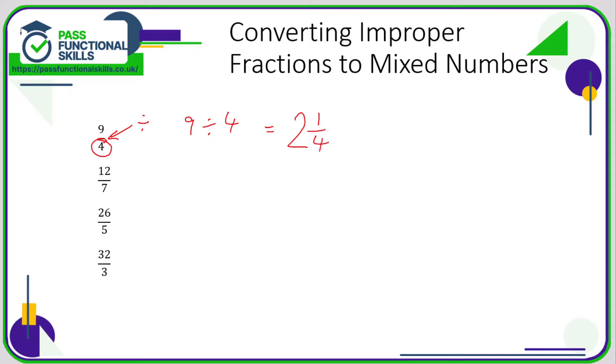So nine quarters or nine over four is the same as two and a quarter, and this is a much more sensible way to give an answer to a question. If I said to you that I'd eaten nine quarters of a pizza, that's a bit of a strange thing to say, but if I said two and a quarter pizzas, then you've got a better idea of just how much pizza I've eaten.